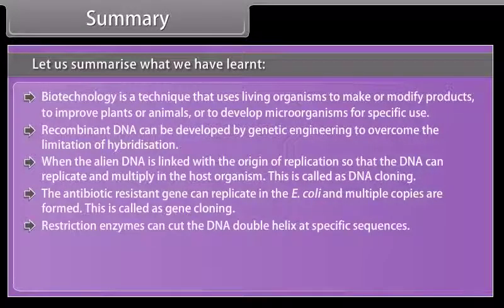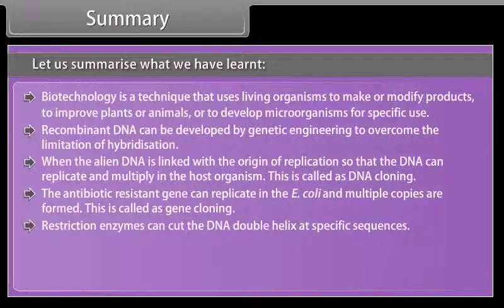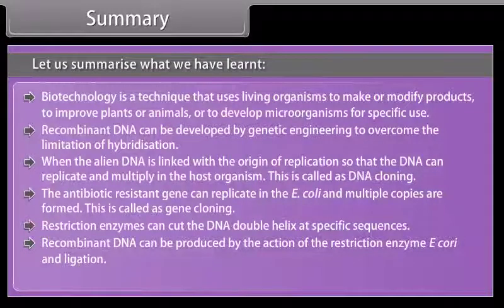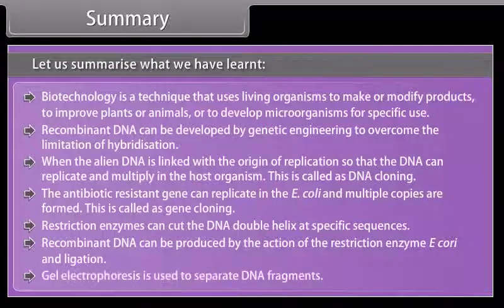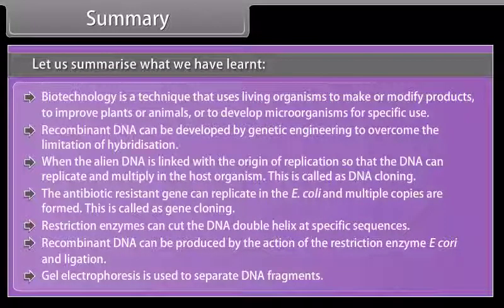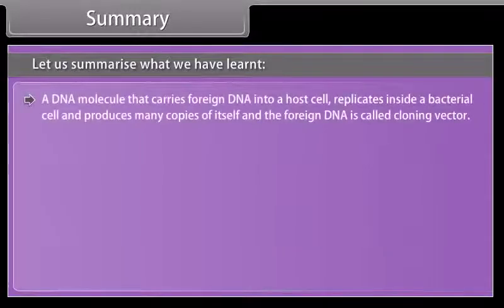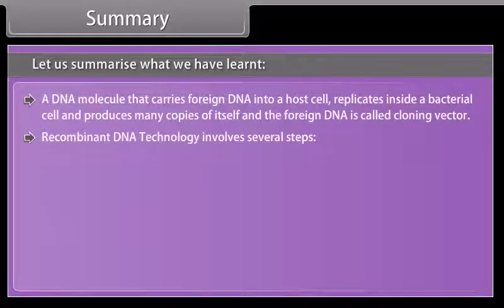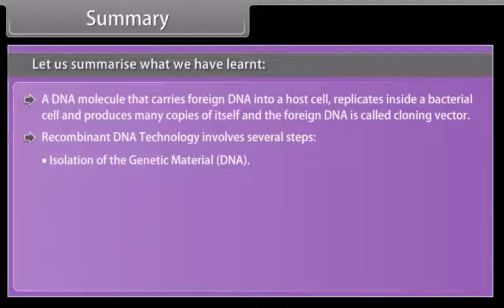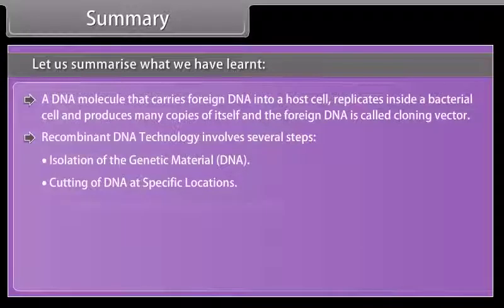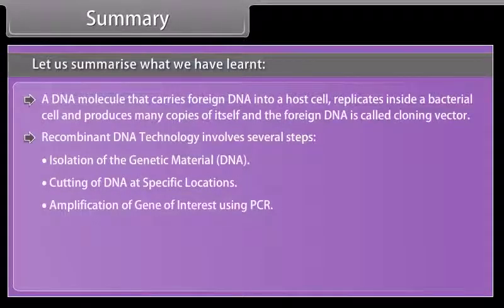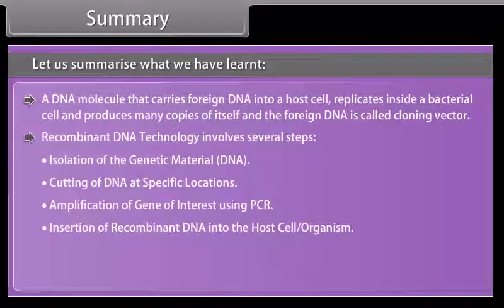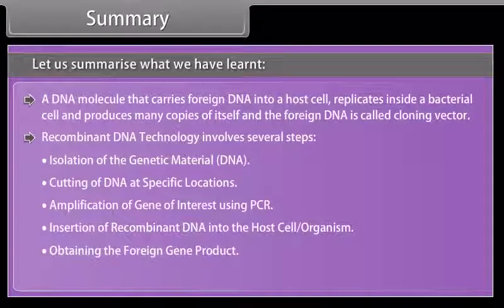Restriction enzymes can cut the DNA double helix at specific sequences. Recombinant DNA can be produced by the action of the restriction enzyme E. coli and ligation. Gel electrophoresis is used to separate DNA fragments. A DNA molecule that carries foreign DNA into a host cell replicates inside a bacterial cell and produces many copies of itself and the foreign DNA is called cloning vector. Recombinant DNA technology involves several steps: isolation of the genetic material DNA, cutting of DNA at specific locations, amplification of gene of interest using PCR, insertion of recombinant DNA into the host cell organism, obtaining the foreign gene product, downstream processing.